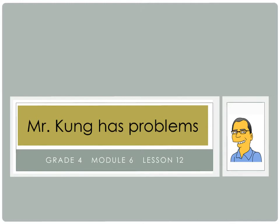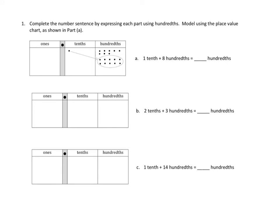Let's take a look at one problem. Problem number 1 asks us to complete the number sentence by expressing each part using hundredths. Model using the place value chart as shown in Part A. Let's take a look at what they did in Part A. In Part A, they had one-tenth. I see that's this guy over here. And eight hundredths.